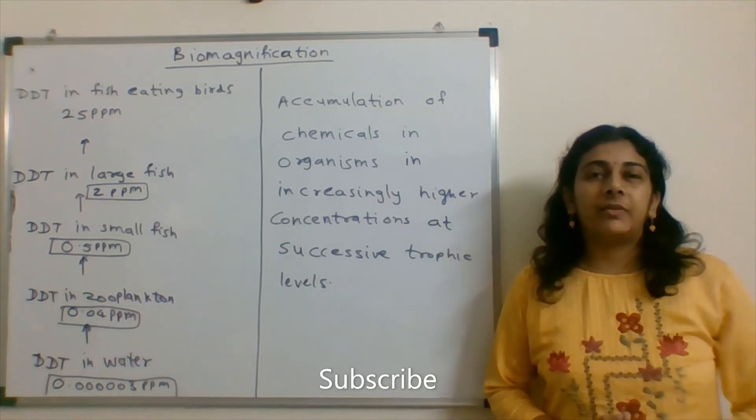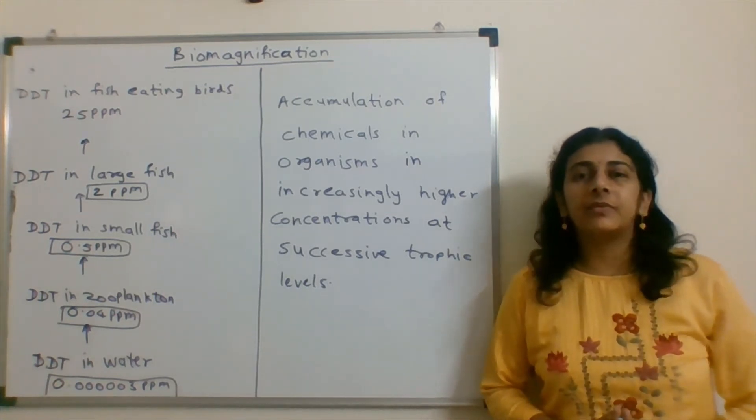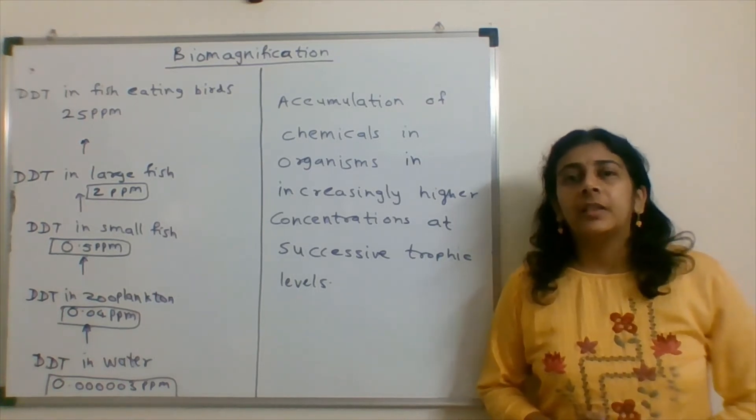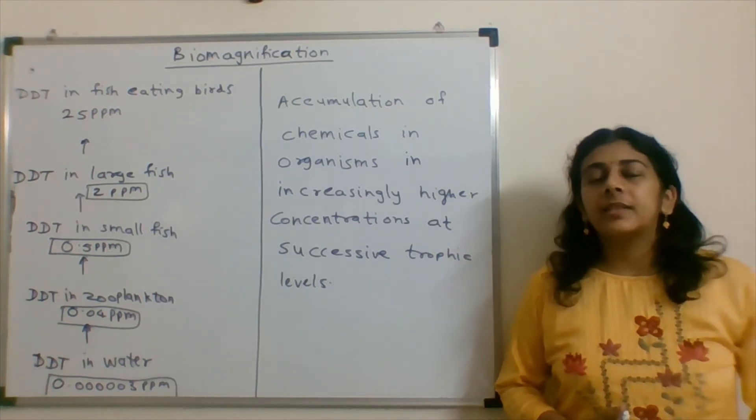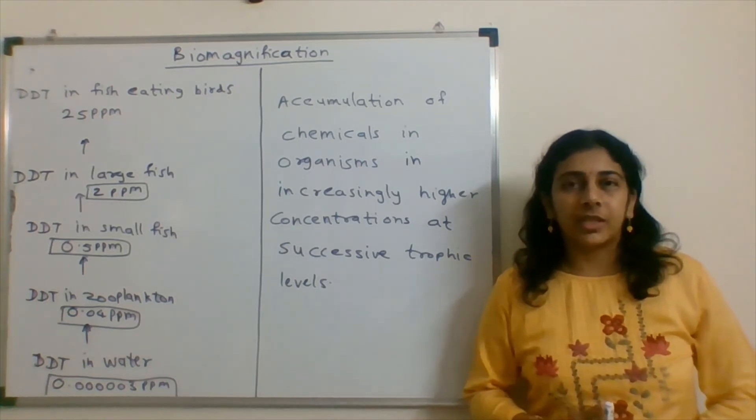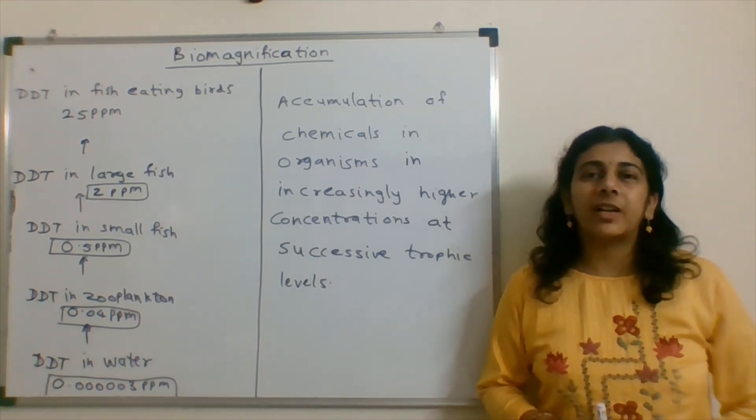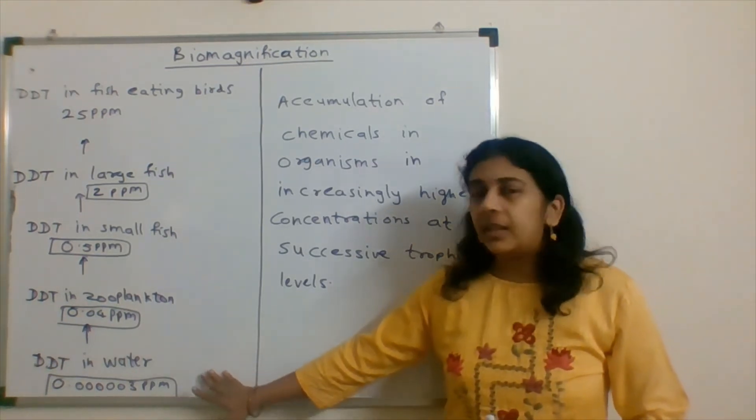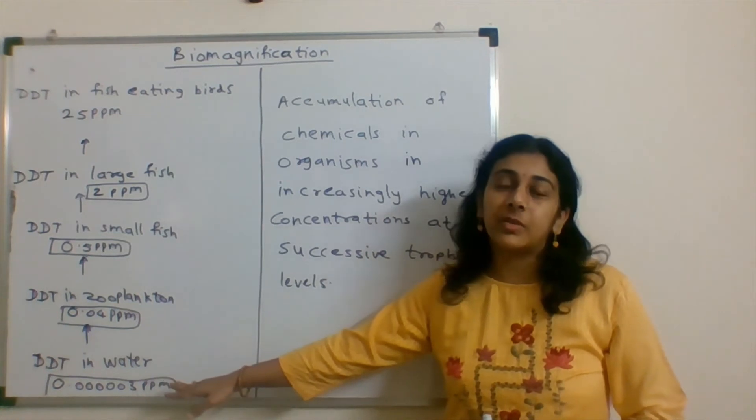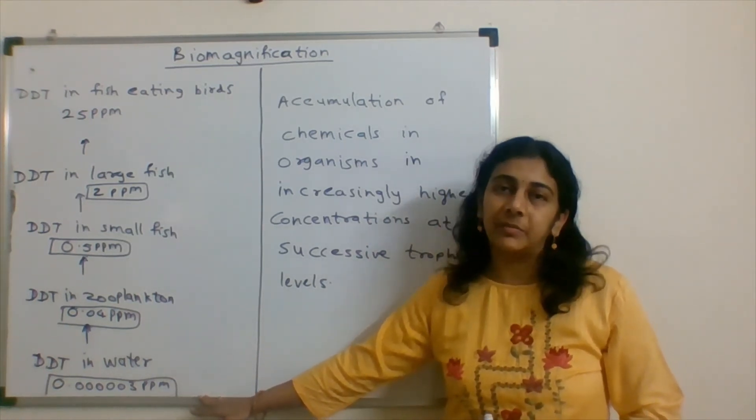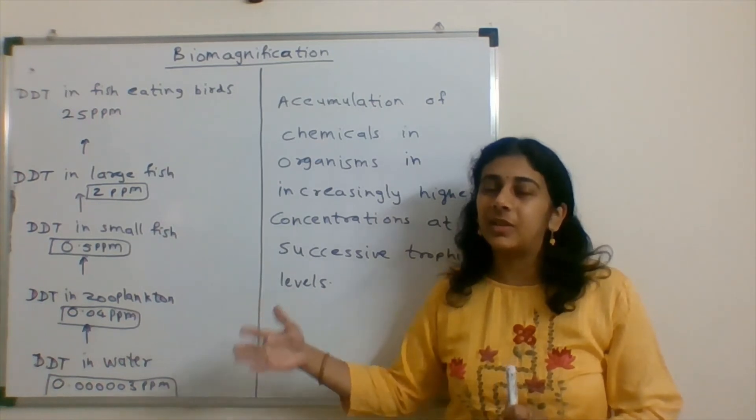To understand biomagnification, we will take an example of DDT. This is a famous pesticide and insecticide used in farms, in agriculture, and routinely used in household gardens. DDT gets accumulated in the food chain. DDT is not a water soluble compound, it's a fat soluble compound. If we see the concentration in water, it is very low, 0.0000003 ppm parts per million.